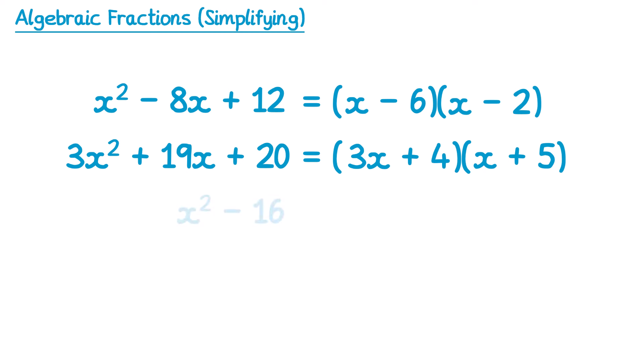Then we have expressions like this. You need to recognise that this one is the difference of two squares. The giveaways are the square number 16, and also that there's no x term. This will still factorise into two brackets. If we square root 16 we get 4, so this is x plus 4 and x minus 4.